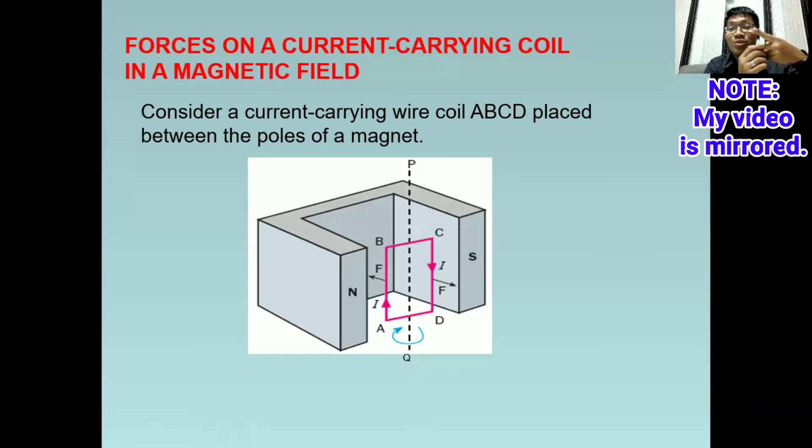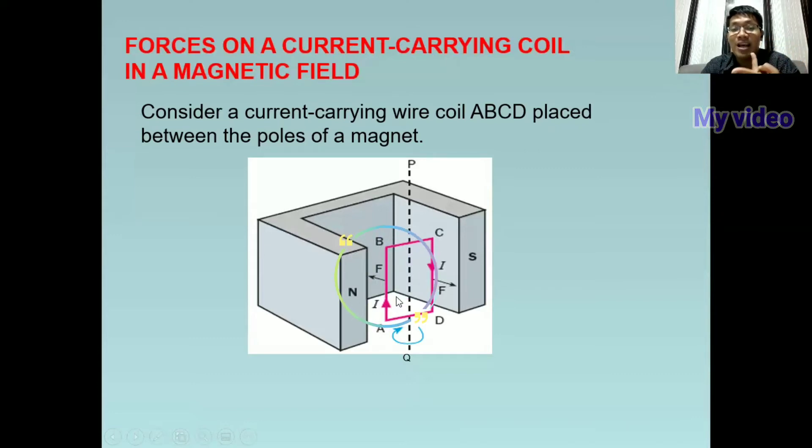Let's use the middle finger to point to the direction of the current. Let's focus first on A and B. The direction is upward. Therefore, the force will move this way, and as you see, the arrow is pointing there.